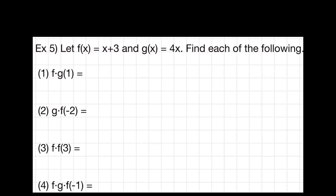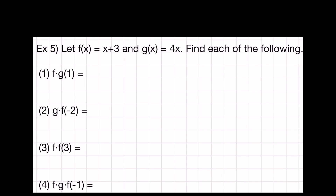There are four questions below, so you can pause this video and do it by yourself. Here, f of x is equal to x plus 3 and g of x is equal to 4x. So f of g of 1 is equal to f of 4 times 1. f of 4 is equal to 4 plus 3, which is equal to 7. And number two: g of f of negative 2 — f of negative 2 is equal to negative 2 plus 3, which is equal to g of 1, which is equal to 4 times 1, and it's 4.